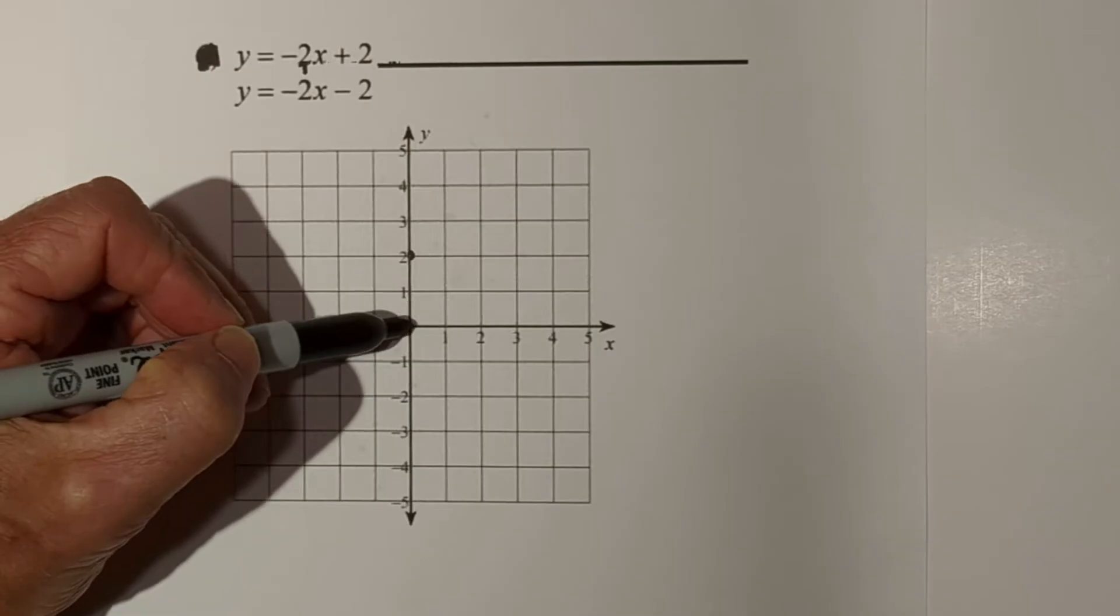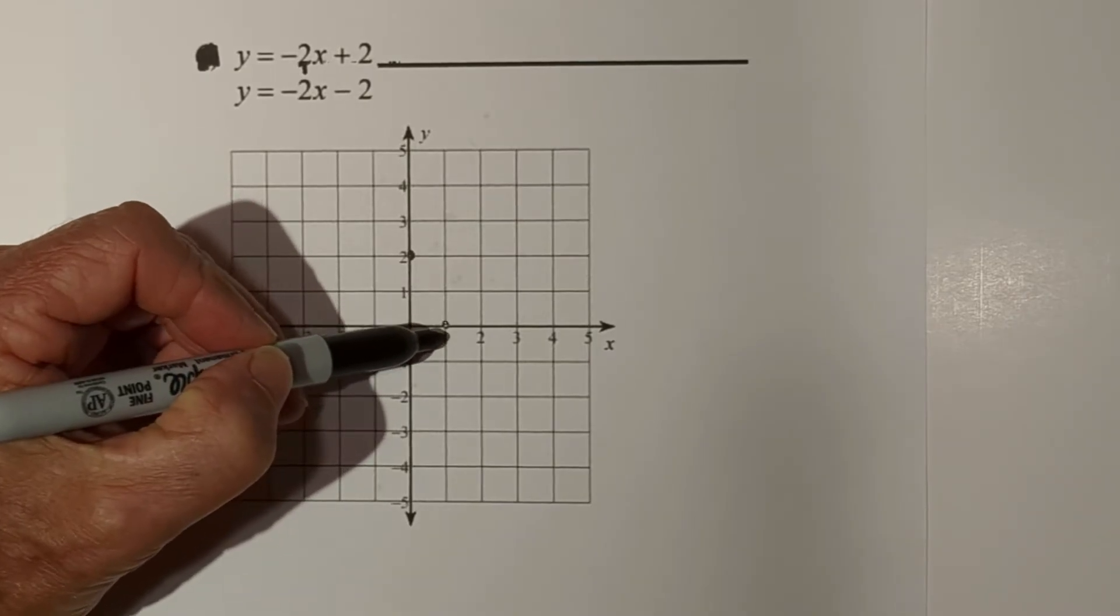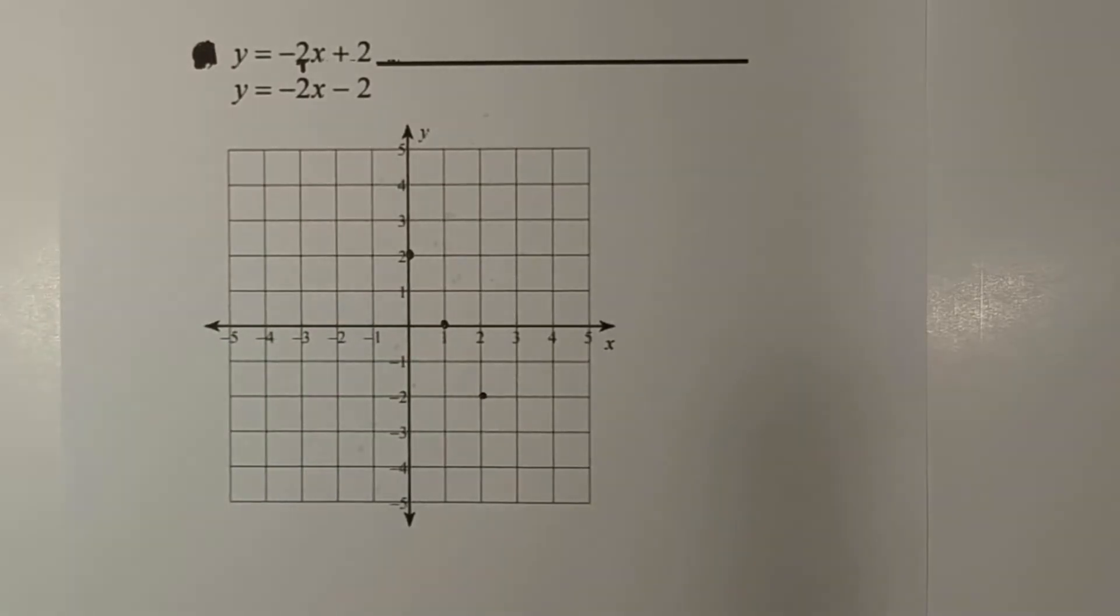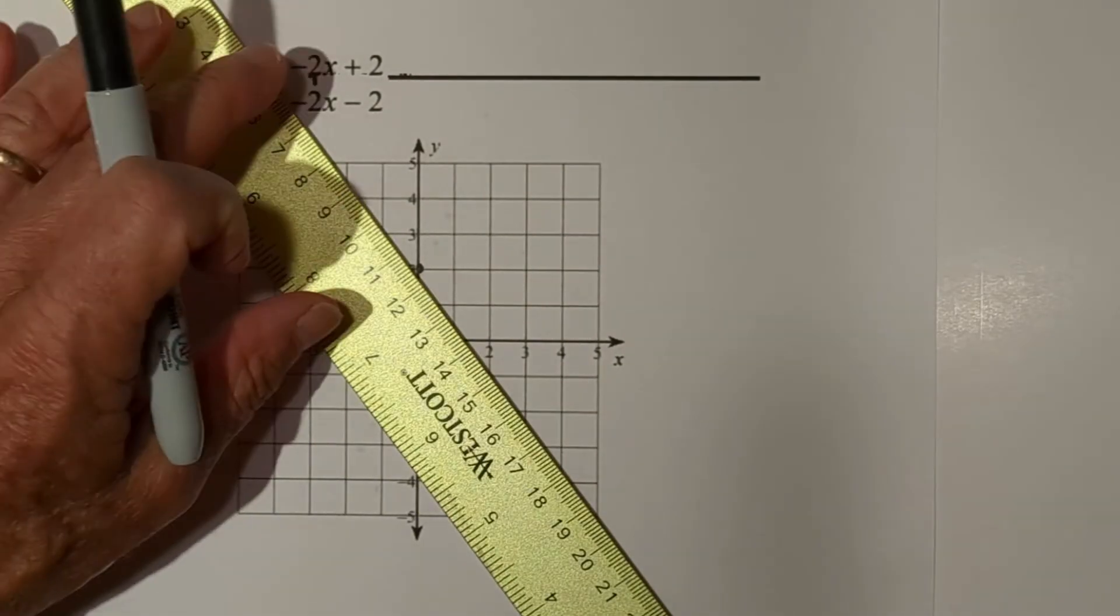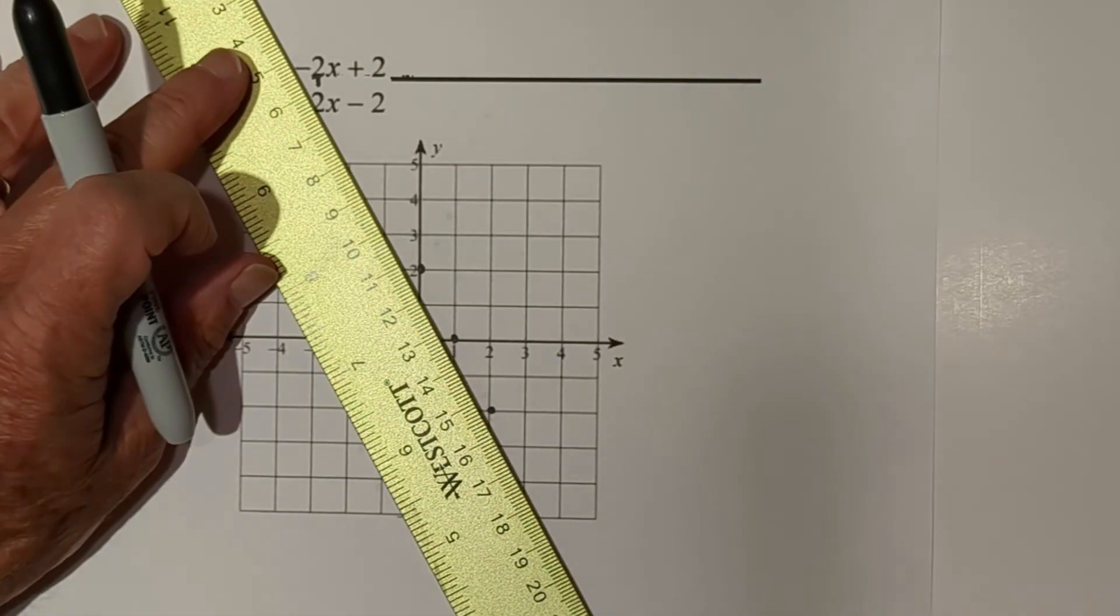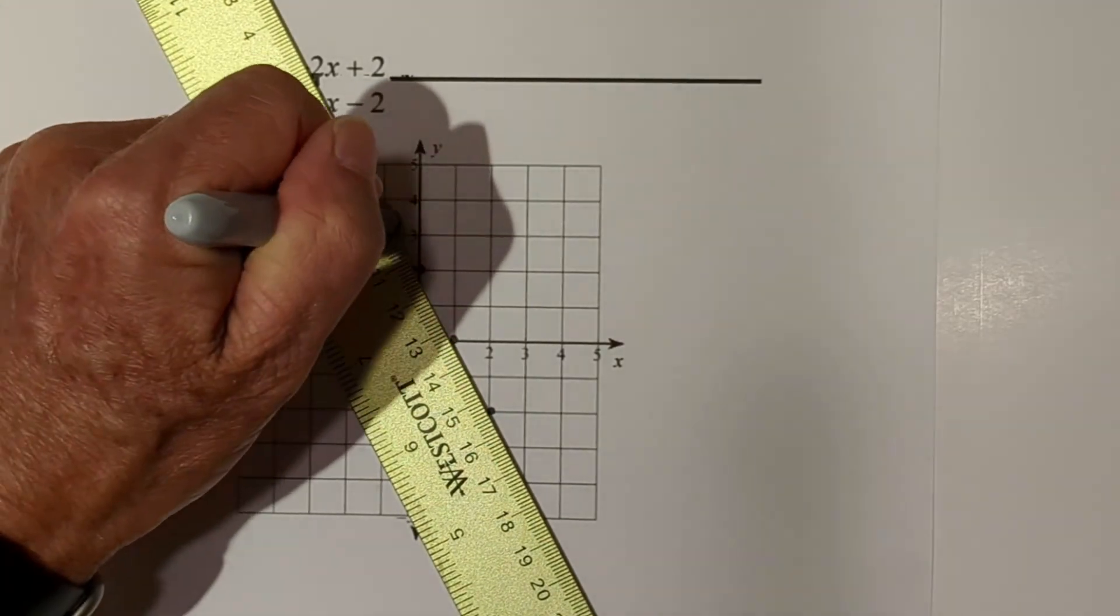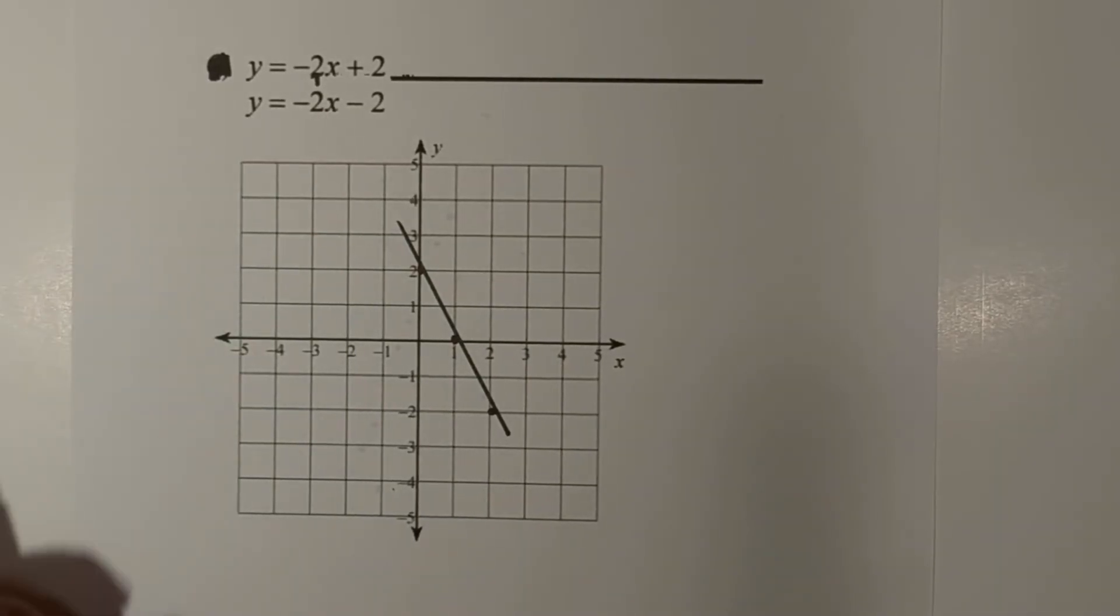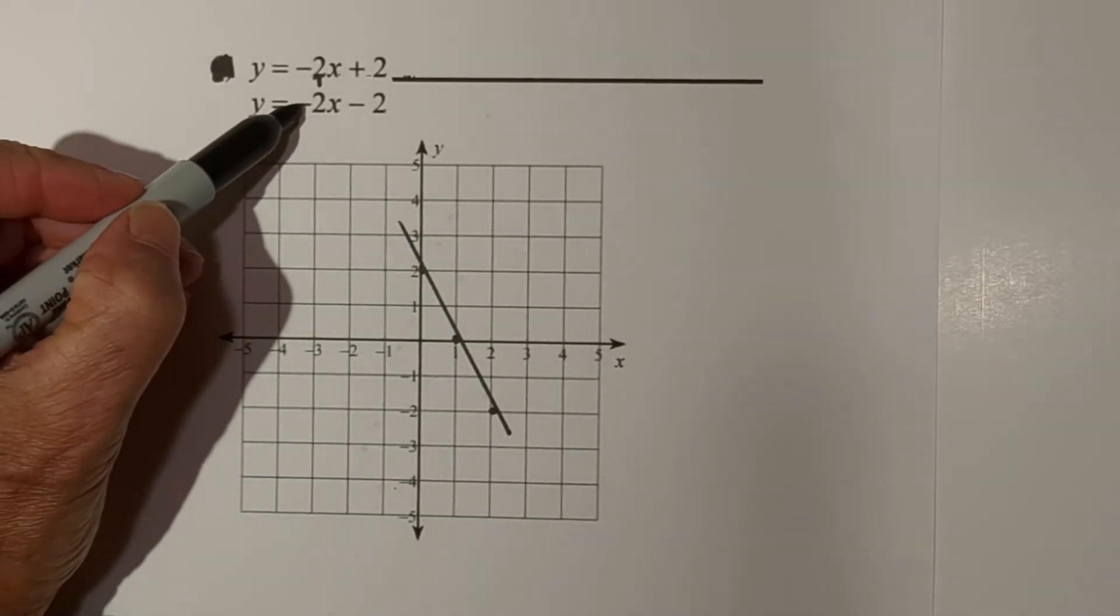So here we go, we got one, two, right one, one to the right one. And then I can draw a line from these three points. Let me do this quickly.